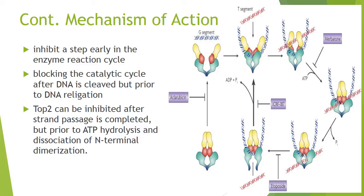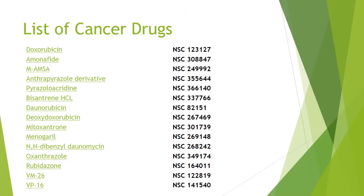Since agents of this class convert topoisomerase-2 into an agent that induces cellular damage, they have been termed topoisomerase-2 poisons. Topoisomerase-2 can also be inhibited after strand passage is completed but prior to ATP hydrolysis and dissociation of the internal dimerization interface.